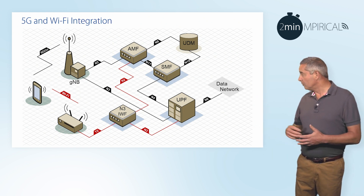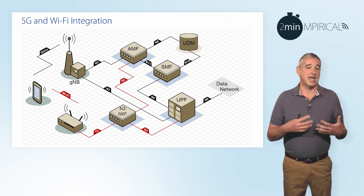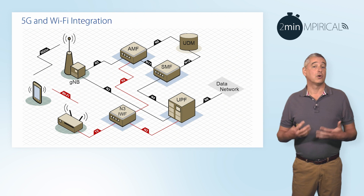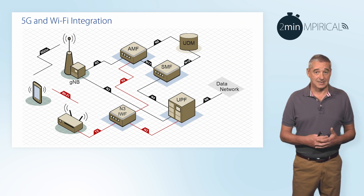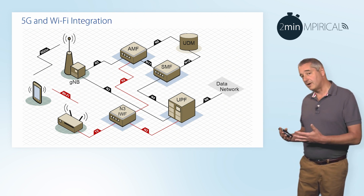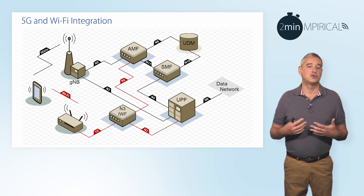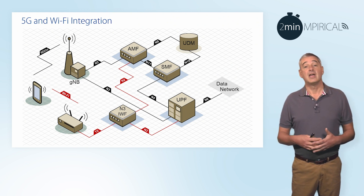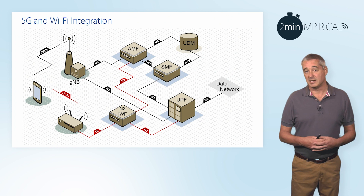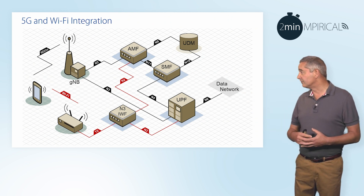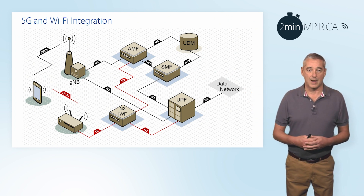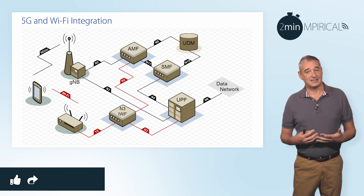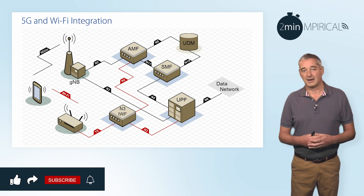It's also worth pointing out that the connection between the access point and the N3IWF will generally cross the internet, and as such Wi-Fi here will be considered an untrusted network. To this end, an IPsec tunnel will be established between the device and the N3IWF, ensuring that information is protected as it travels across the Wi-Fi network.